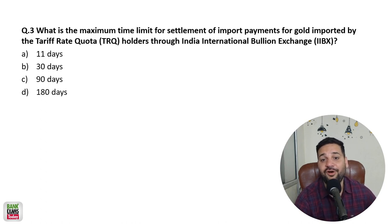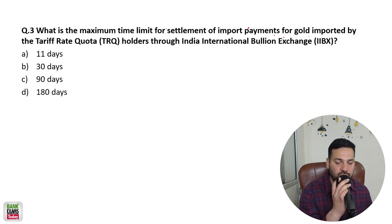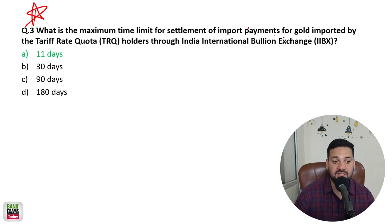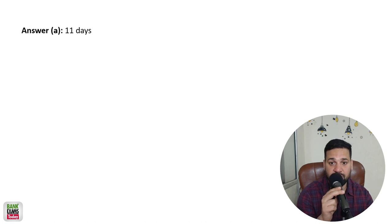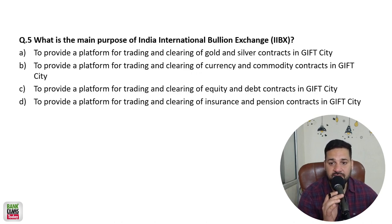What is the maximum time limit for settlement of import payment for gold imported by TRQ holders? It is through India International Bullion Exchange (IIBX). TRQ holders can make an advance payment of up to 11 days via IIBX. That is a really important question — 11 days advance payment. IIBX stands for India International Bullion Exchange IFSC Limited.